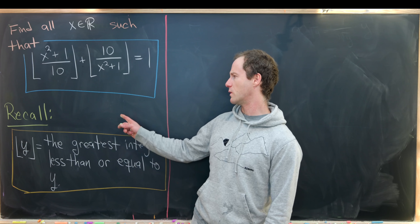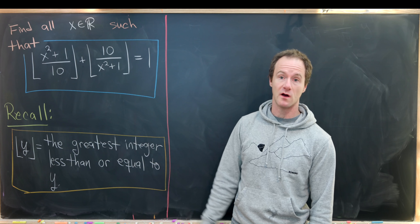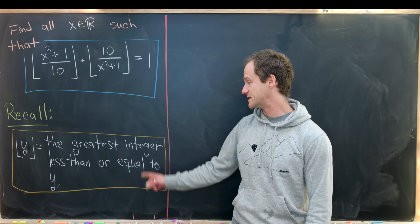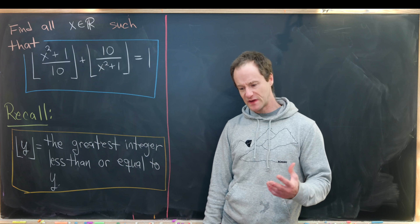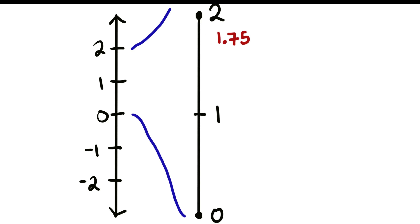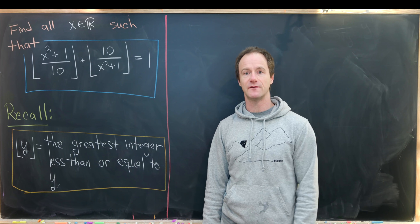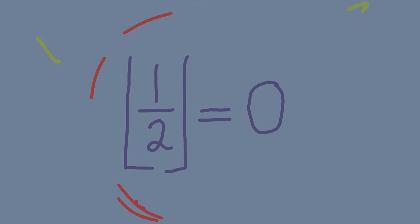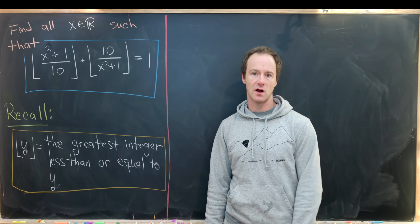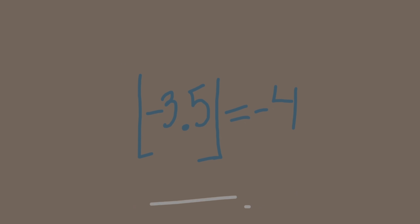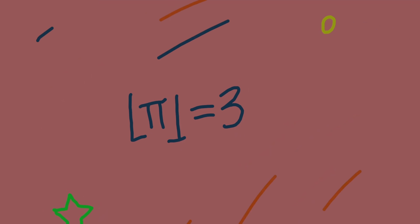Let's quickly recall what the floor function does. The floor of y, where y is any real number, is the greatest integer less than or equal to y. You can think of the floor function as like an elevator down to the first integer you would pass. For instance, the floor of 1/2 is 0, the floor of negative 3.5 is negative 4 (because you go downstairs), and the floor of pi is 3 since pi is between 3 and 4.